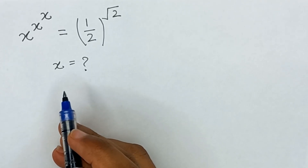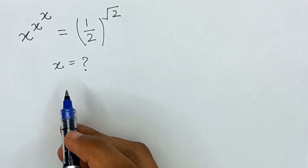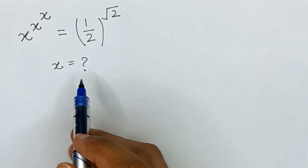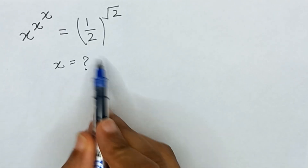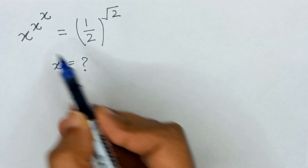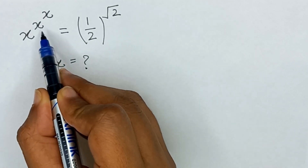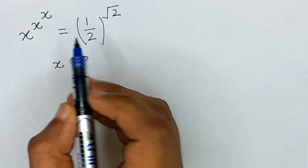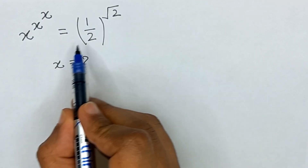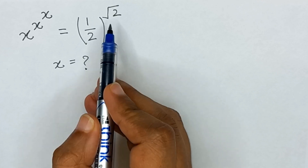Assalamu alaikum friends and welcome back to my channel. In this video we will find the value of x from this given equation, which is x raised to the power x raised to the power x is equal to 1 divided by 2 raised to the power square root of 2.